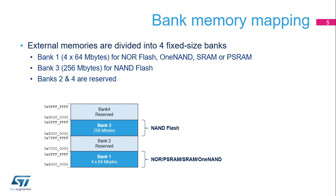The external memory space is divided into fixed-sized banks of 256 MB each. Two external memory banks are dedicated to the FSMC. Bank 1 is connected to the NOR or PSRAM controller and Bank 3 is connected to the NAND controller. Banks 2 and 4 are reserved.